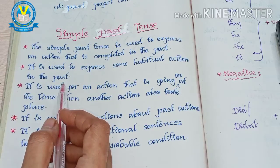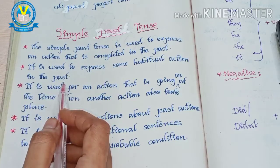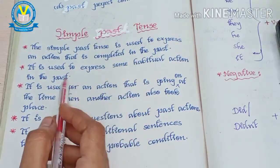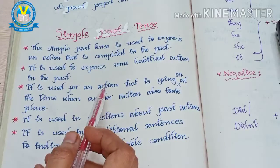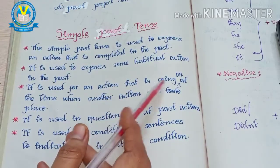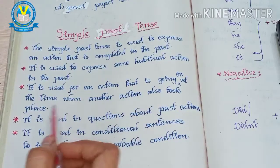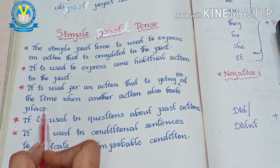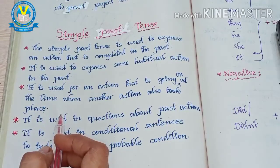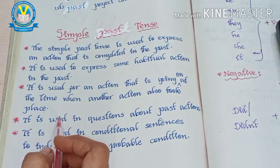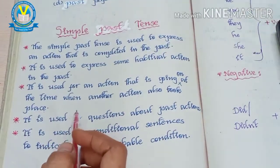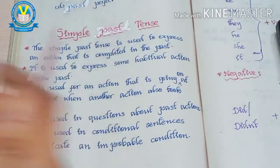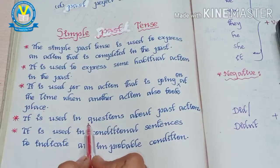Simple past tense is also used to express some habitual action in the past — for example, dancing, danced, performed, watched. These types of habitual actions are expressed using simple past tense. It is also used for an action that was going on at the time when another action took place. For example: Mona watched the movie and ate food — those are already completed actions.